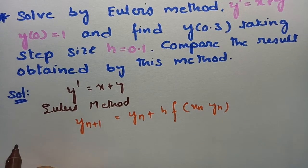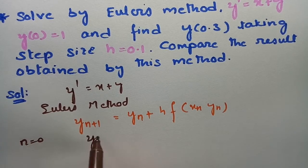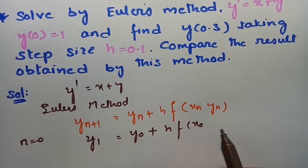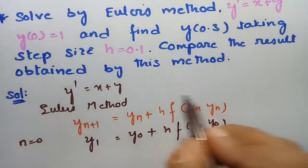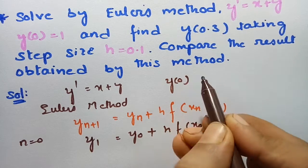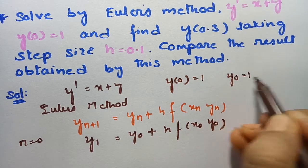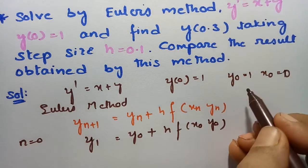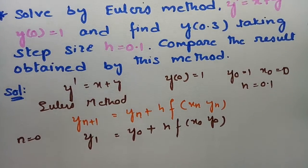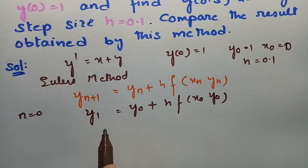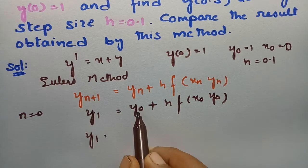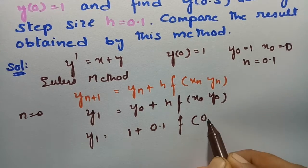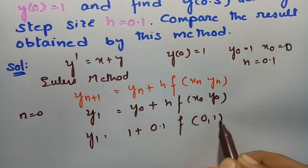First, I am going to keep n = 0. Then y_1 = y_0 + h · f(x_0, y_0). From the given conditions, y(0) = 1 means y_0 = 1, and x_0 = 0, with h = 0.1. Substituting all the values: y_1 = 1 + 0.1 · f(0, 1).